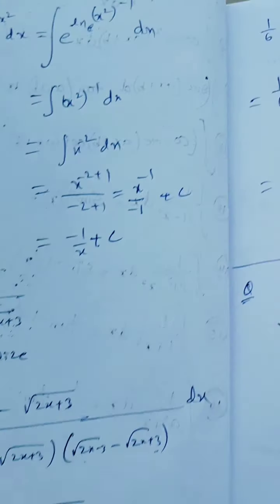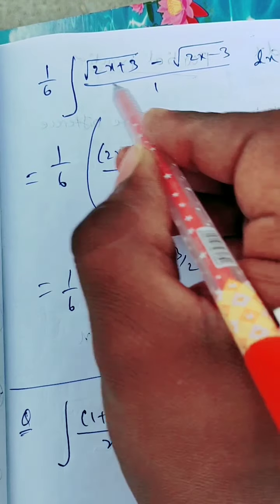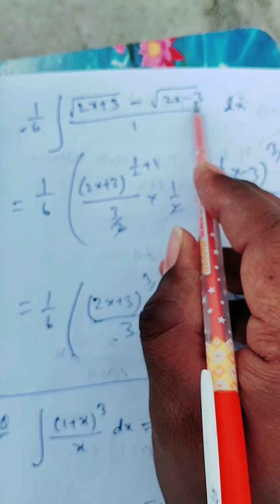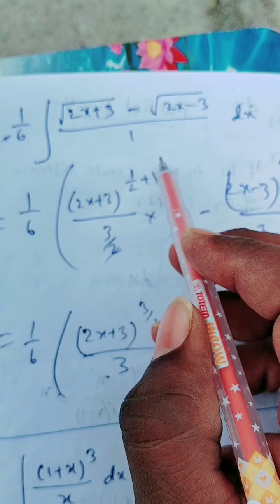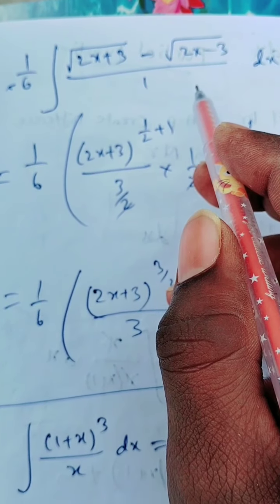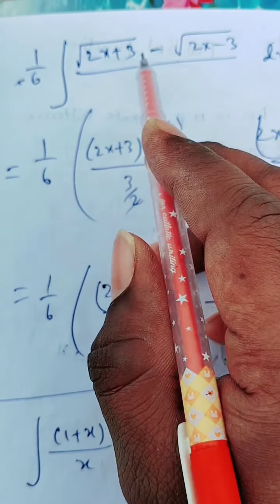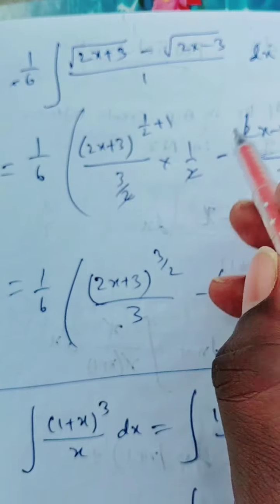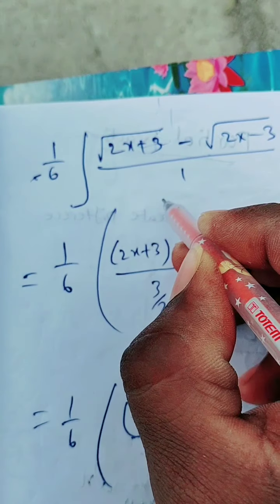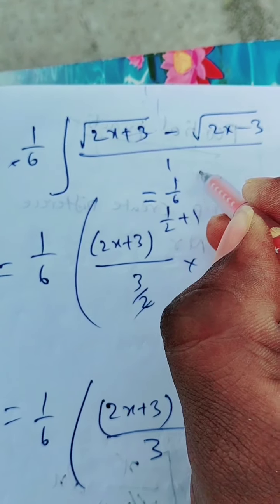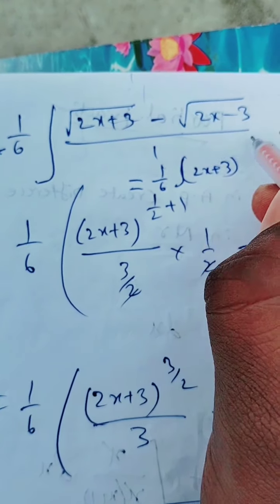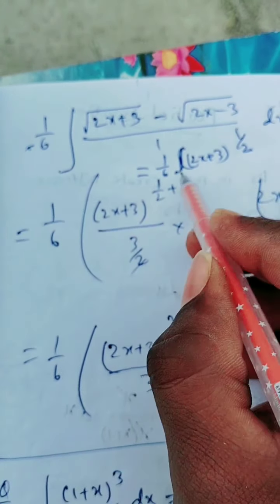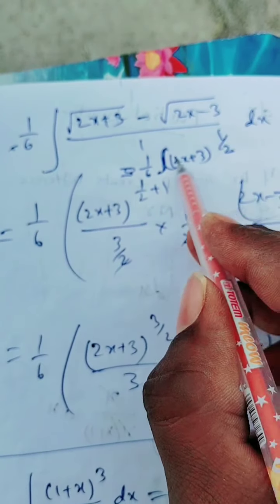So we get minus 6 in the denominator. The integration becomes 1 by 6 times integration of under root of 2x plus 3 minus under root of 2x minus 3, dx. Separating each term: 1 by 6 times integration of 2x plus 3 whole power 1 by 2, minus 2x minus 3 whole power 1 by 2, dx. We apply the standard power rule formula to each term.